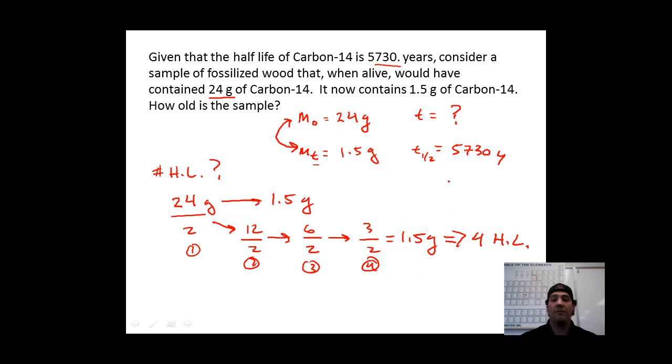Now, since we have 4 half-lives, and we know the length of each half-life, which is 5,730 years, if we multiply 4 times 5,730 years, that's going to give us our total time: 22,920 years. So, different sort of problem, but we can solve for the variable that we want.